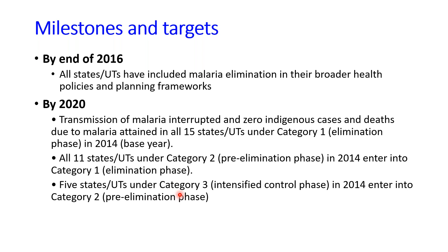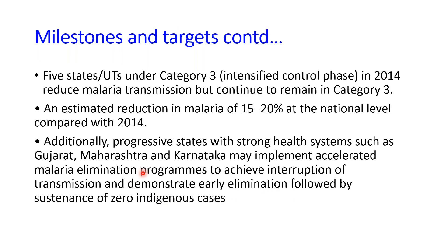The five states under Category 3, the intensified control phase, showed a reduction in malaria transmission but continued to remain in Category 3. An estimated national-level reduction in malaria of 15 to 20 percent was expected compared to 2014 figures by 2020.